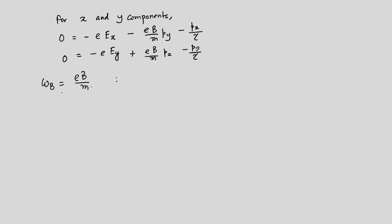Now define the cyclotron frequency ω_B = eB/m. Many texts write this as ω_c because in the presence of a magnetic field, the charged particle undergoes rotational motion at this angular frequency. This cyclotron frequency increases linearly with B, so as you increase B, ω_B increases and the cyclotron frequency increases.